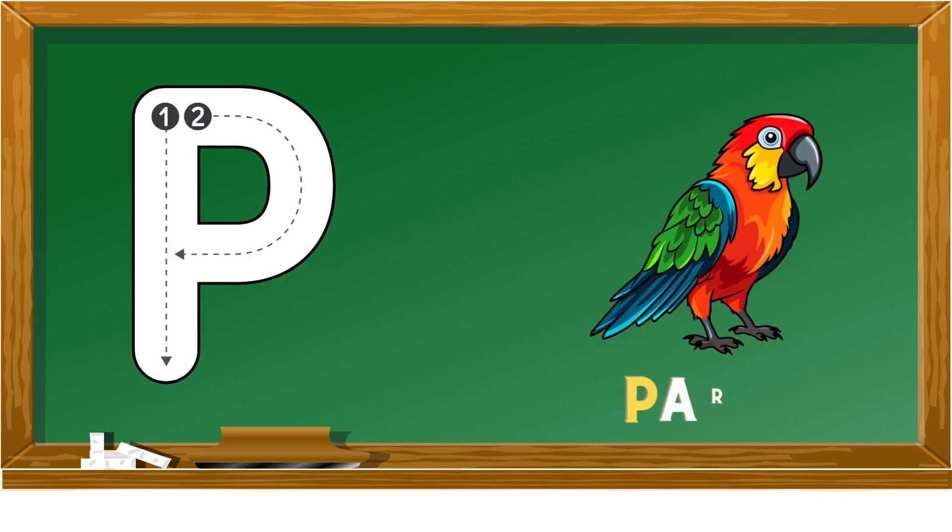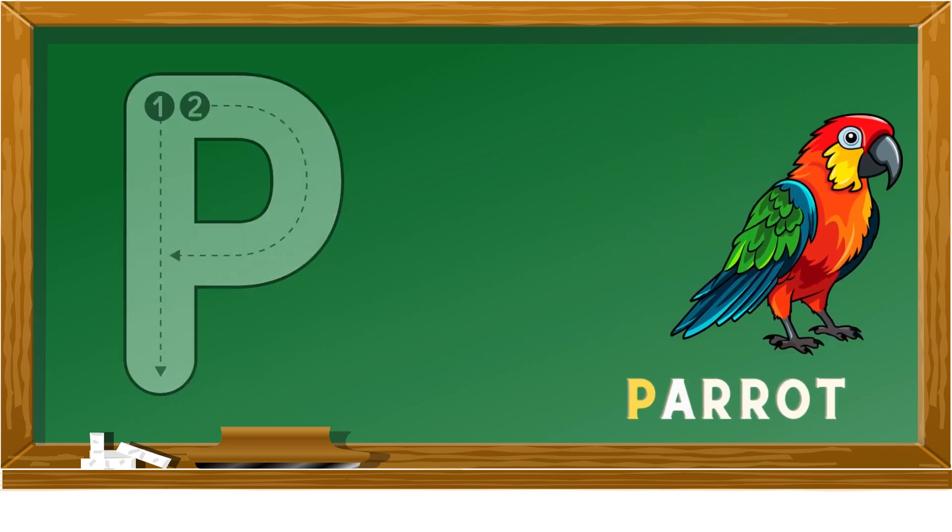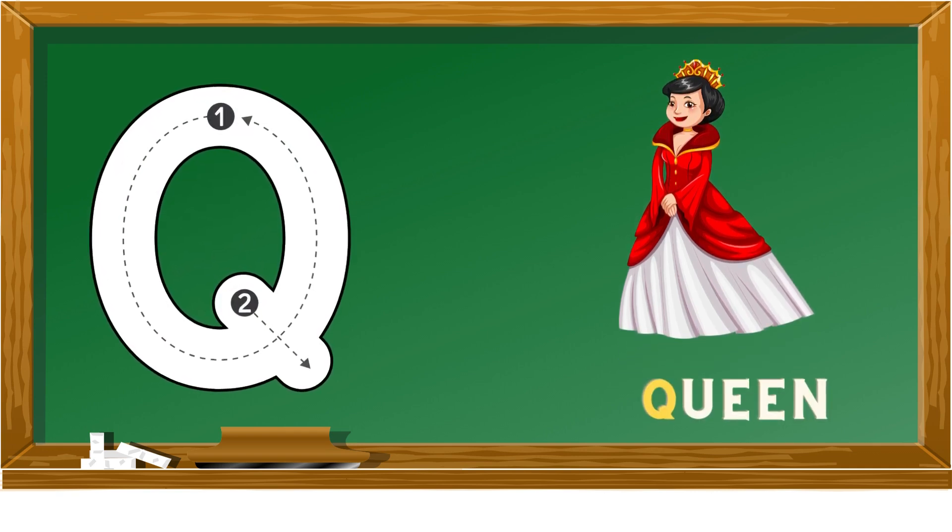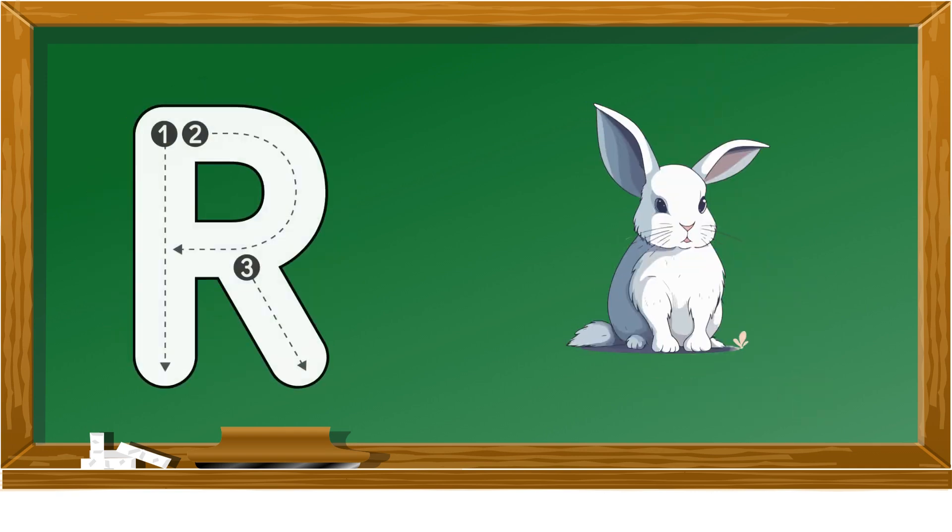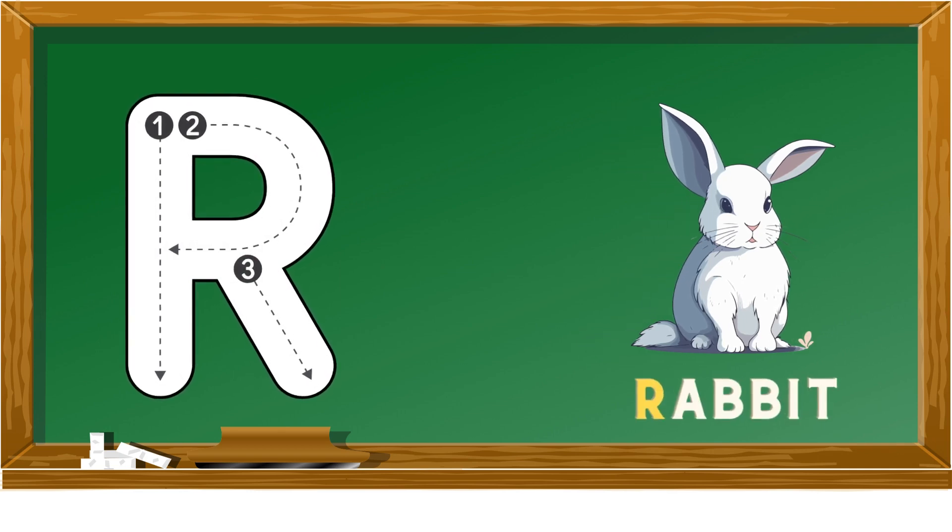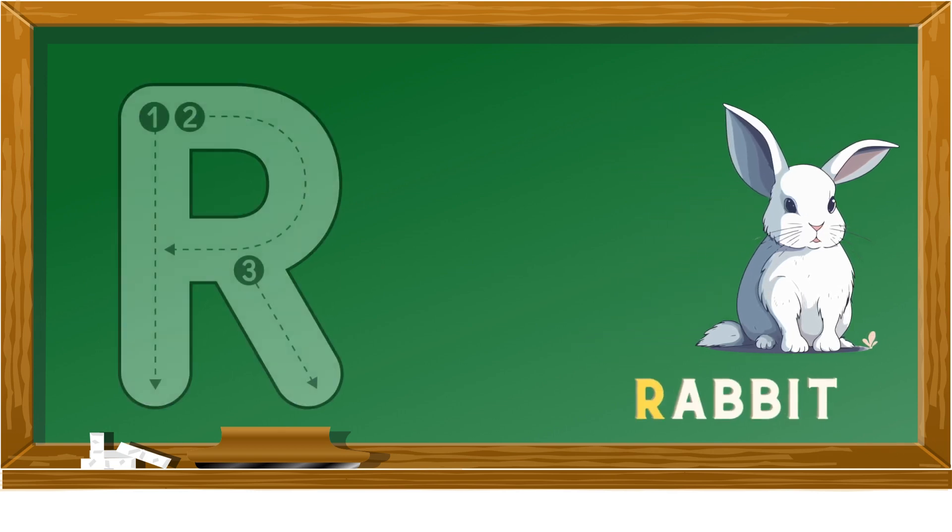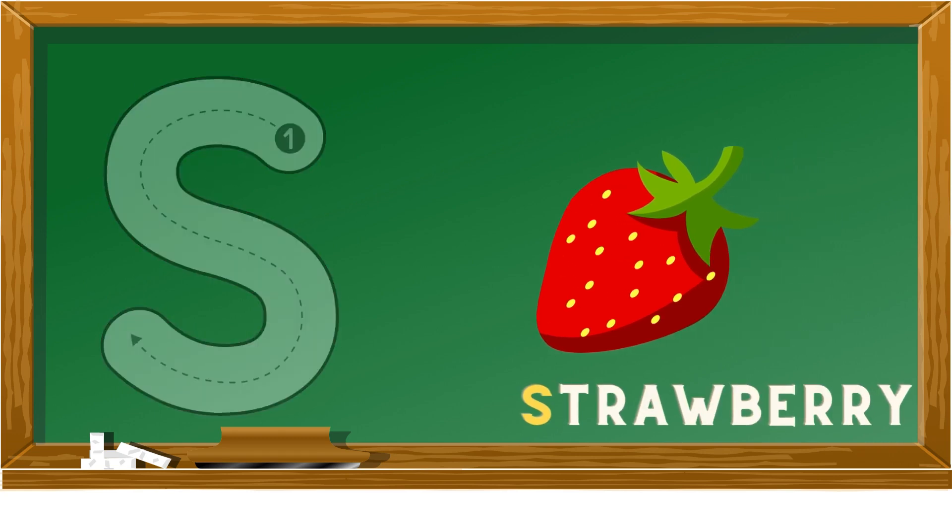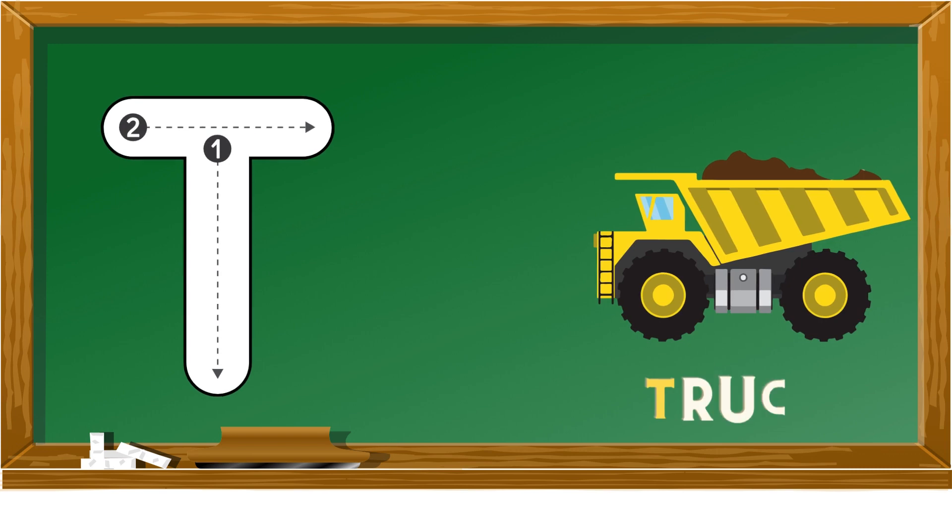P is for parrot, Q is for queen, R is for rabbit, S is for strawberry, T is for truck.